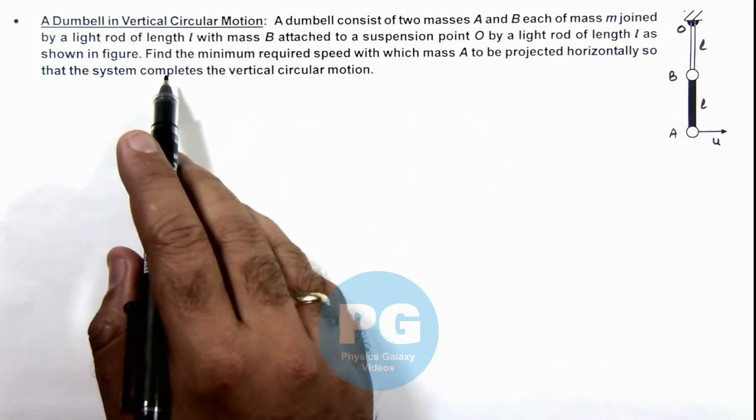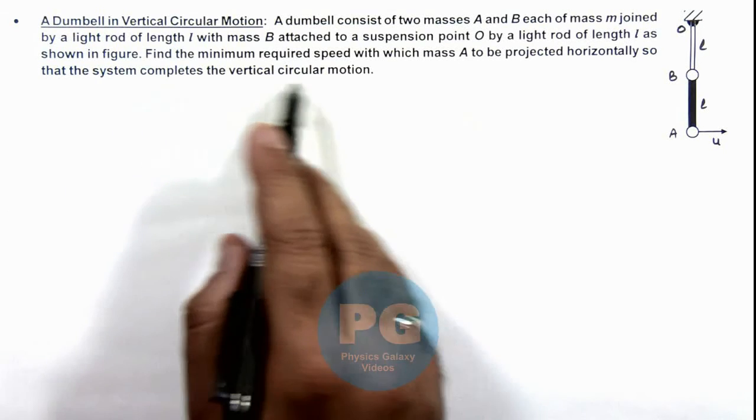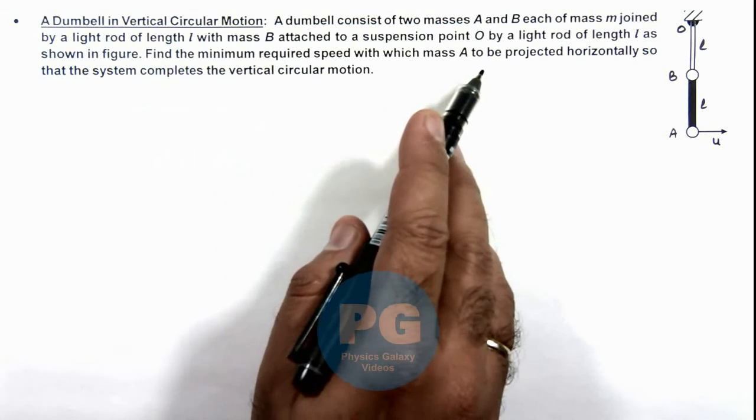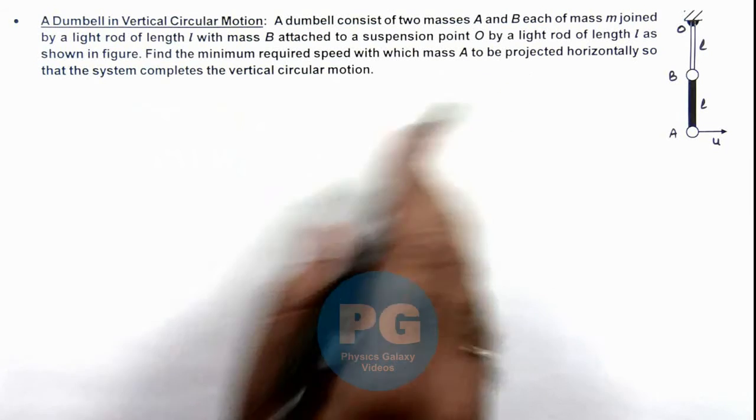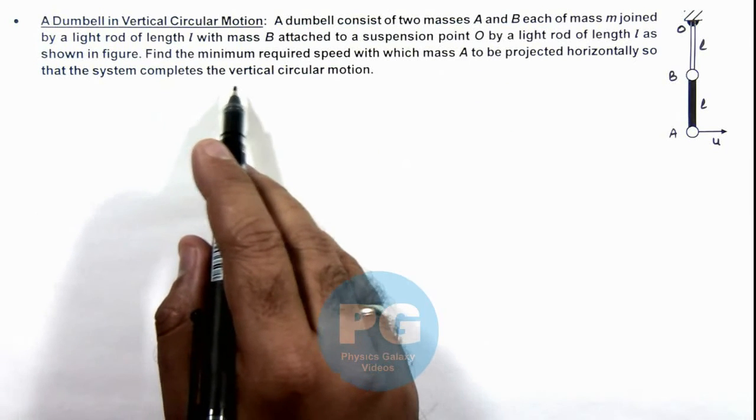We are required to find the minimum required speed with which mass A is to be projected horizontally so that the system completes the vertical circular motion.